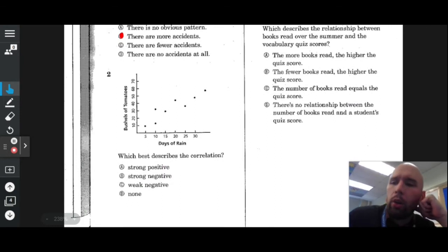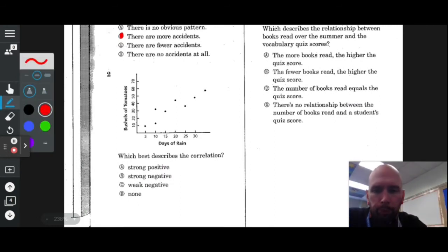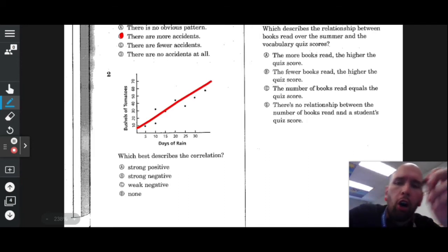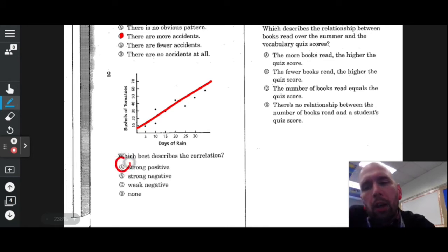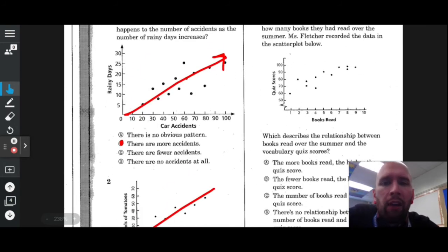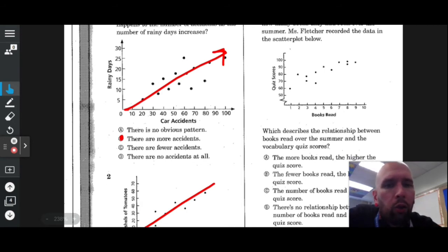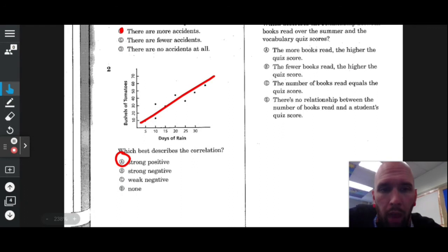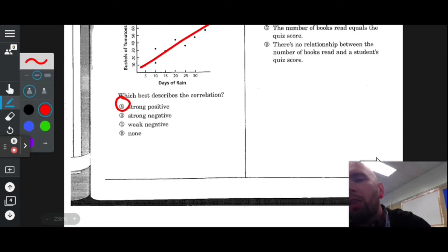What best describes the correlation? Let's draw it out. That is a strong positive. If you're wondering what's the difference between a strong positive and a weak positive, you could look at those dots and say that is definitely a positive correlation. If you can say that's definitely positive, then it's a strong correlation.